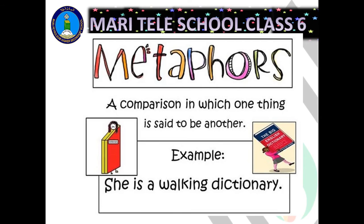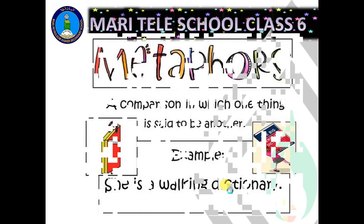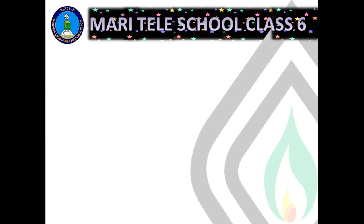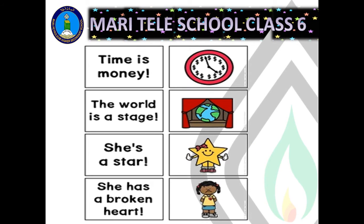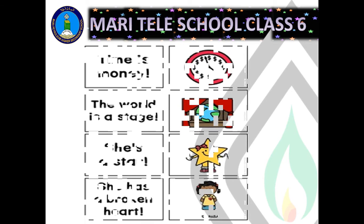Then we have metaphors. A metaphor is a comparison in which one thing is said to be another. Examples include 'she is a walking dictionary', 'time is money', 'the world is a stage', 'she is a star', and 'she has a broken heart'. All these are examples of metaphor.